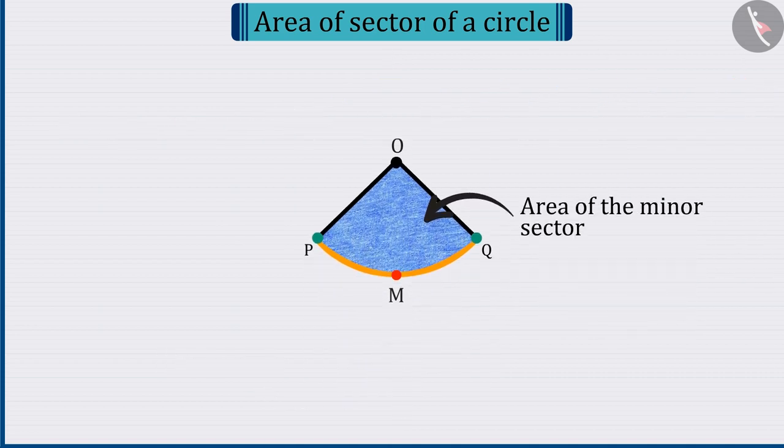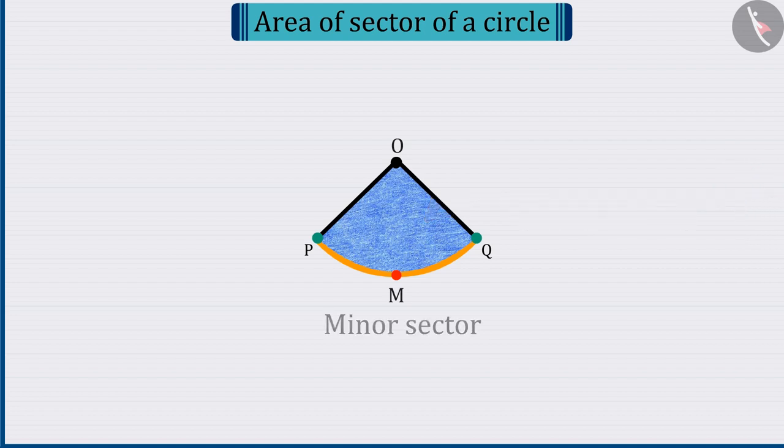So now, can you determine the area of minor sector OPMQ? Come, let's see. Assume in minor sector radius to be R and angle POQ be theta degrees.